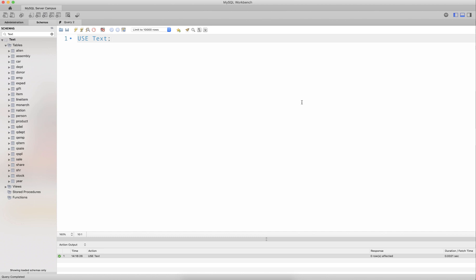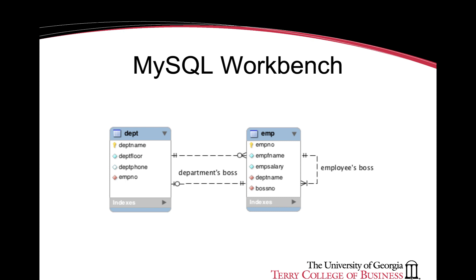Consider two tables that have both a one-to-one and a one-to-many relationship: department and employee, as seen in the following diagram. The one-to-many relationship indicates that a department has many employees — essentially the composition of a department. The one-to-one relationship indicates which employee is the boss of which department.